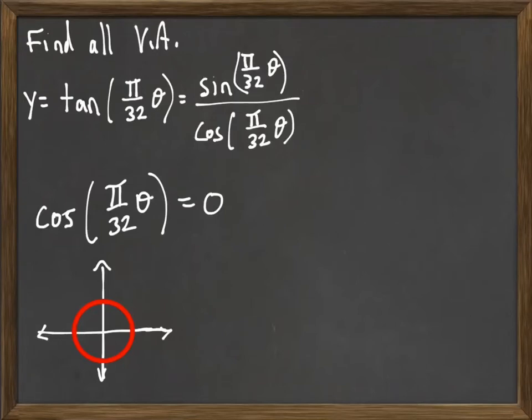Well, cosine, remember, in the unit circle, is the x-coordinate. So we need the radian measures when the x-coordinate is going to be zero. And that occurs up here on the y-axis at π over 2, and also on the y-axis here at 3π over 2.